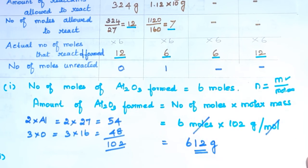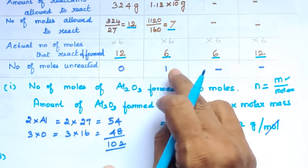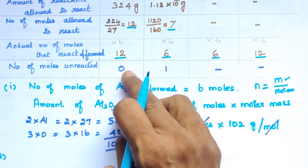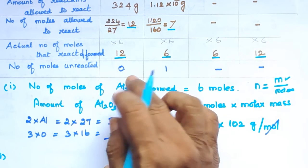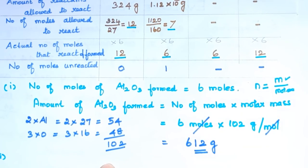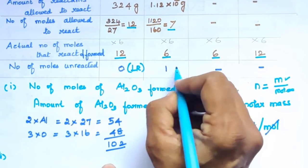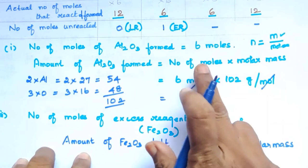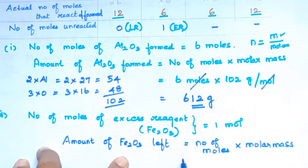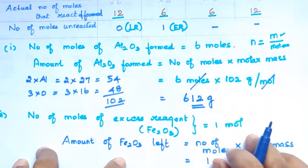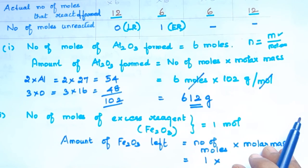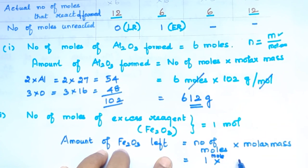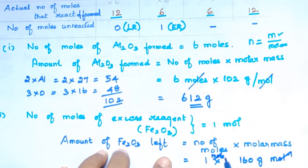For the second part — how much excess reagent is left — the excess reagent is Fe2O3. We had 7 moles but only 6 moles reacted, so 1 mole of Fe2O3 is left. Mass of excess = 1 mole × 160 g/mol = 160 grams. So 160 grams of Fe2O3 is the answer. Hope you understand, thank you.